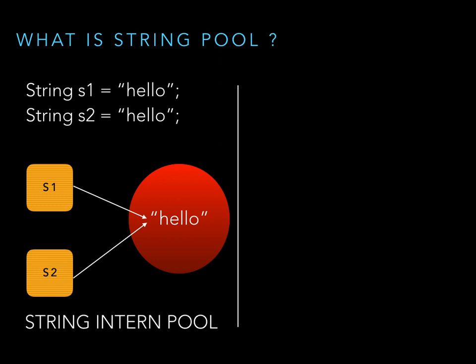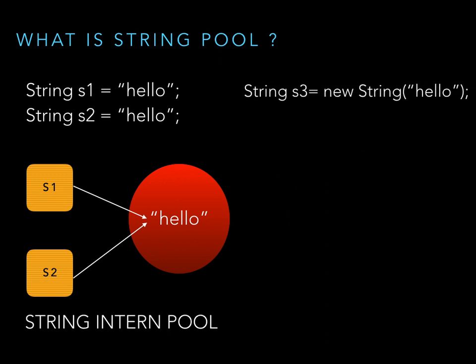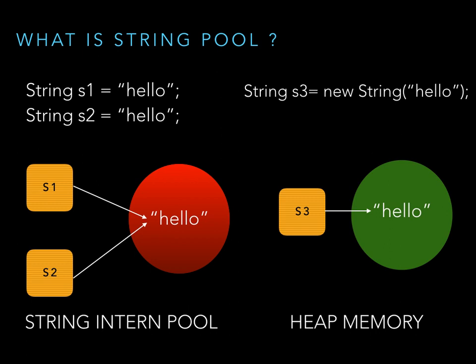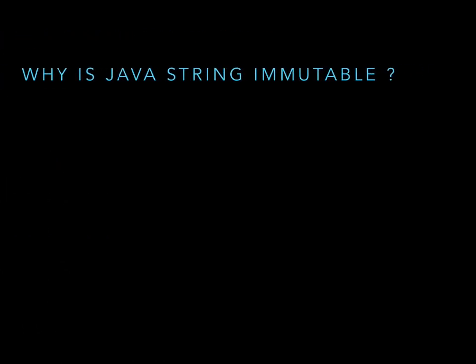Now let's see what happens when we use the 'new' keyword to create a string instead of a string literal. Whenever you create a string using the new keyword, a new string object is created every time and this object is not stored in the string pool. Instead, it is stored in the Java heap memory — represented by the green oval box. So s3 points to the Java heap memory. The main difference: 'hello' as a literal stays in the string pool, while 'hello' created with new is an object in heap memory.